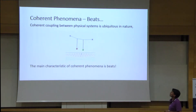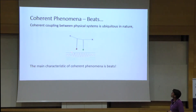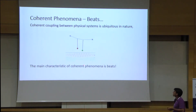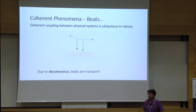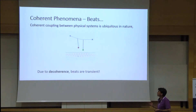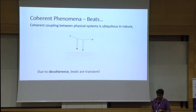This is the basic of a coherent phenomenon — a beat. If you have two oscillators that are coupled, you could see energy being transferred from one to the other and back. This is really the main characteristic of any coherent phenomenon. But beats are almost always transient — they have a coherent lifetime. There's decoherence, there's loss, and at some point the beats die out.